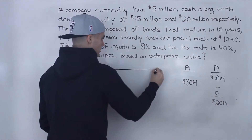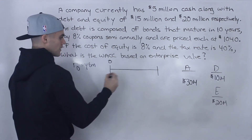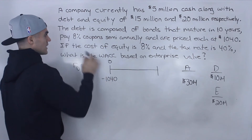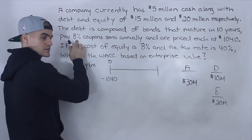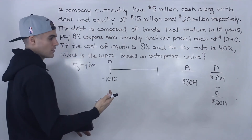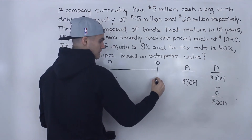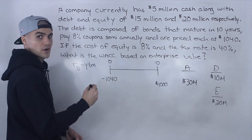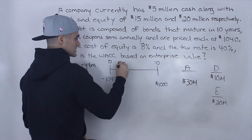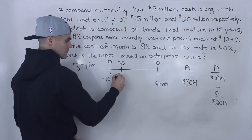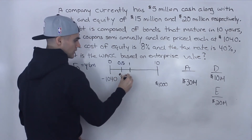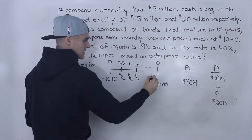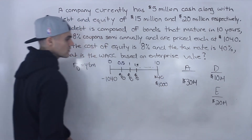Let's do a quick bond review on a timeline. At time zero, if you buy these bonds, you spend $1,040 — a negative cash flow. The bonds pay coupons semi-annually at 8% annual, so divide by two to get 4%, multiplied by the face value of $1,000, giving $40 every six months. The face value of $1,000 is received at year 10. So every six months we receive $40, all the way to year 10 where we also get $40 plus the face value of $1,000.